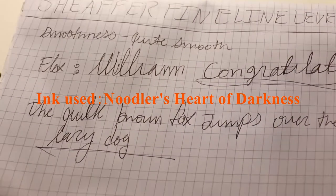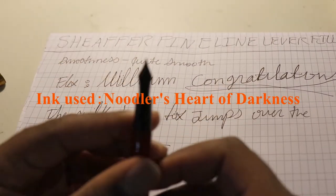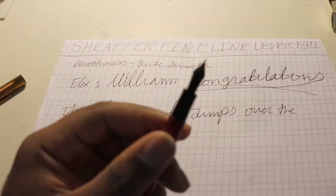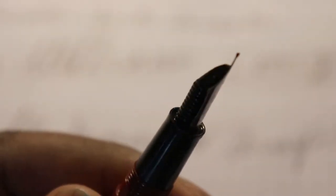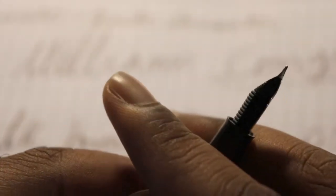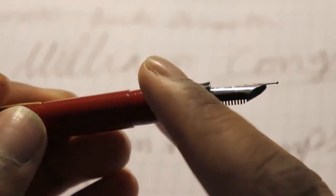As you can see here, it's a medium line, because it's a 341. And as you can see here on the nib, it has this beaded shape. And this bead decides how smooth and the line width. It's a pretty broad bead, because it's a medium Schaefer Fine Line. So that's pretty interesting.